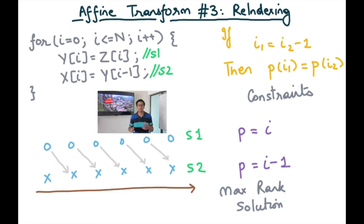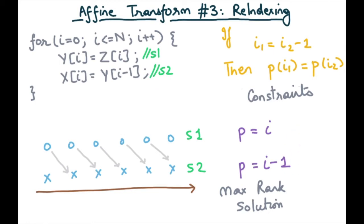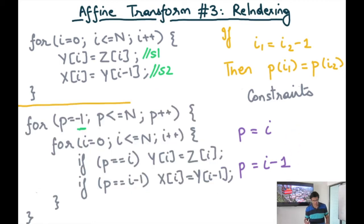And now we are going to do the code generation. This is another small example of a space partitioning constraint problem that solves this kind of example and constructs an affine transform that we are going to call re-indexing. Let's see how the generated code would look like for this solution to the space partitioning constraints.